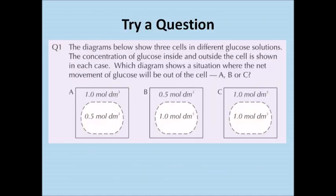Now have a go at this question to test your knowledge of diffusion. The diagrams below show three cells in different glucose solutions. The concentration of glucose inside and outside the cell is shown in each case. Which diagram shows the situation where the net movement of glucose will be out of the cell? Is it A, B or C? Have a look at how much glucose is inside the cell compared to outside. You can pause this video here if you want to have a think about it.